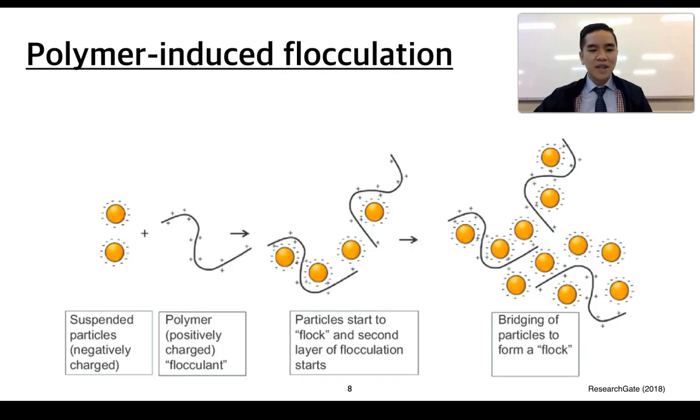Instead of using aluminium ions and aluminium-based salts, we can use polymers to help encourage flocculation as well. So polymers are typically of large molecular mass. They can be either positively or negatively charged. And this can allow for the coagulation, for the neutralisation of the charge of these clay particles. And they can also act to help trap or encapsulate the clay particles to form these larger flocs, which then can be removed or can settle due to gravity.